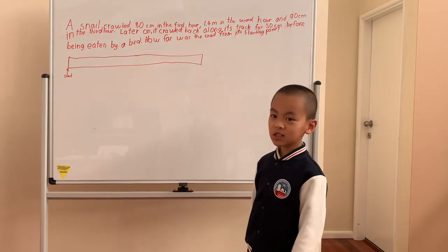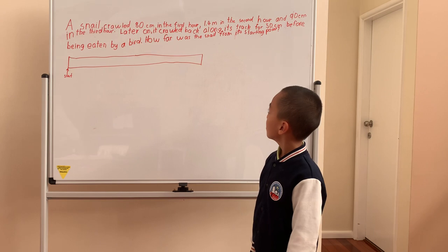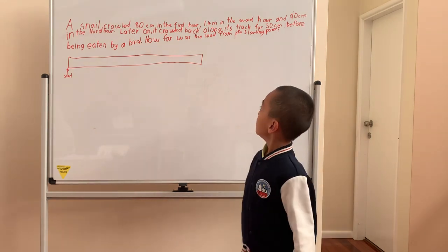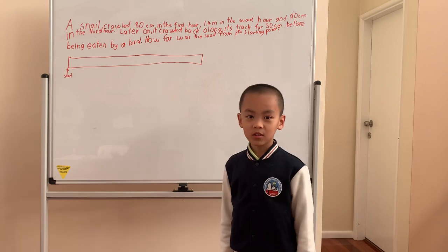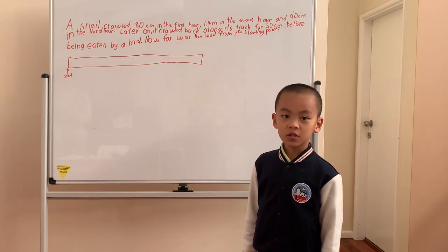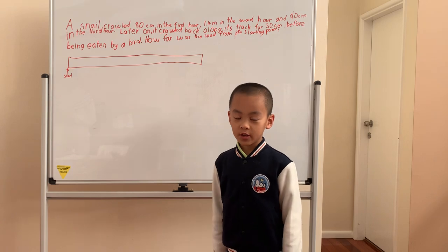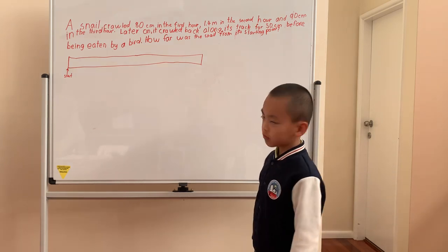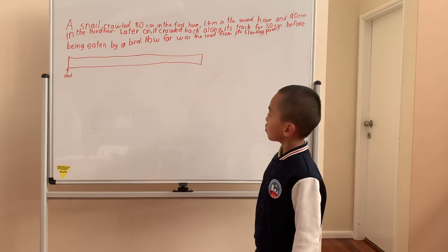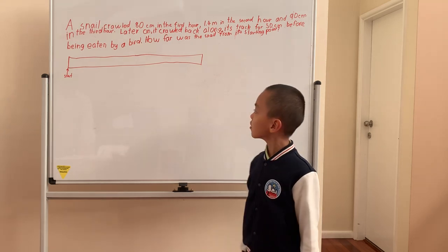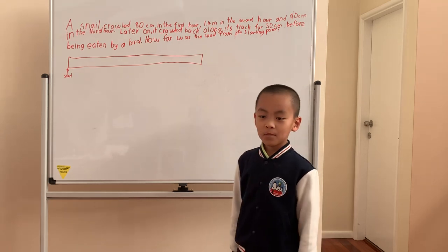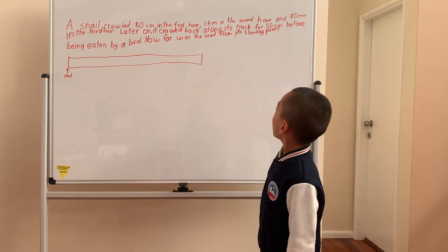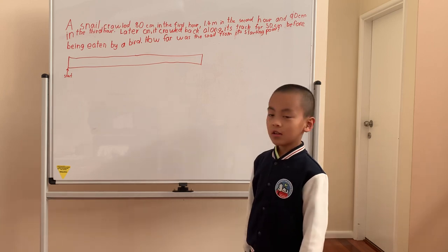A snail crawled 80cm in the first hour, 1m and 40cm in the second hour, and 90m in the third hour. Later on, it crawled back 50cm along its track before being eaten by a bird. How far was the snail from its starting point?